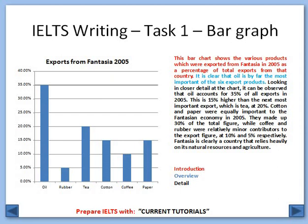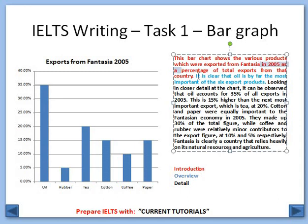A bar chart example — this shows exports from Fantasia: oil, rubber, tea, cotton, and coffee. Coffee is around 10% and rubber is 5%. The introduction: this bar chart shows the various products which were exported from Fantasia in 2005 as a percentage of total exports from that country. Here the overall exports are shown in the form of percentage of total exports.